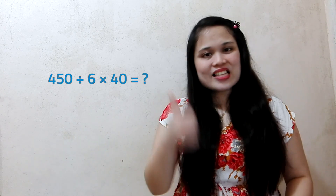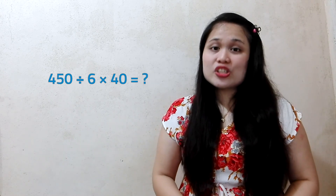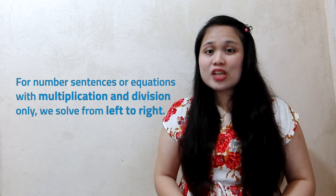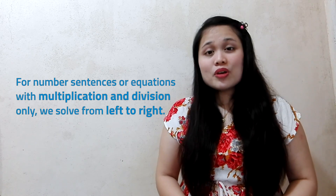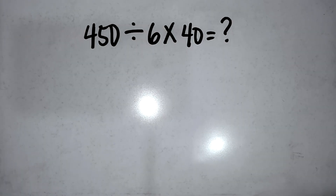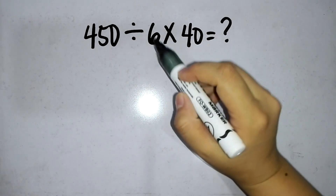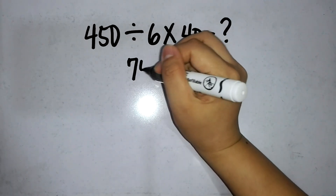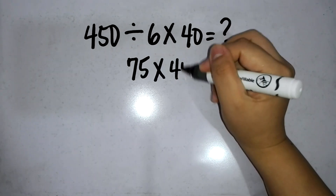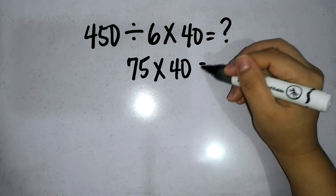How about this? What are the operations you can spot in this expression this time? We see division and multiplication here. When we solve number sentences and equations with multiplication and division only, we also solve from left to right. To solve the problem, we first divide 450 by 6. The quotient will be 75. Then multiply 75 by 40. So the final answer is 3000.